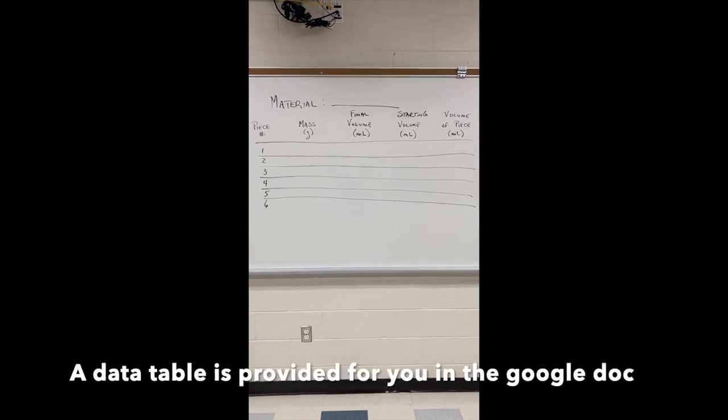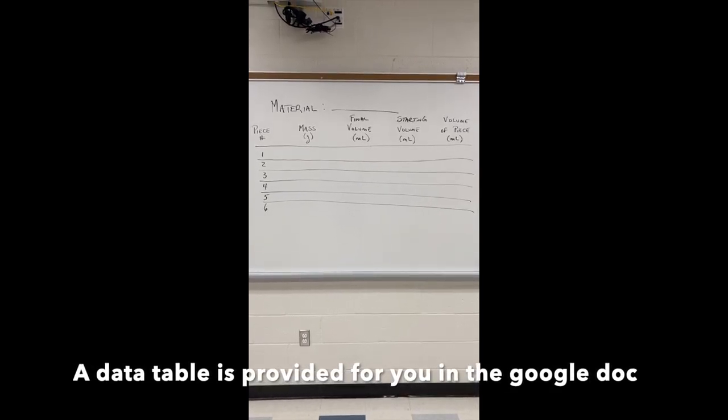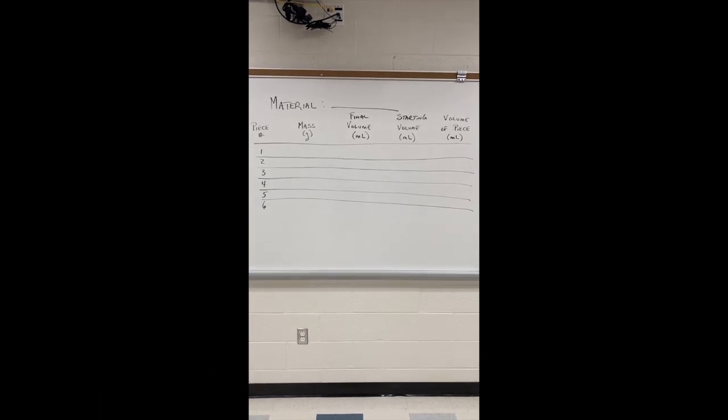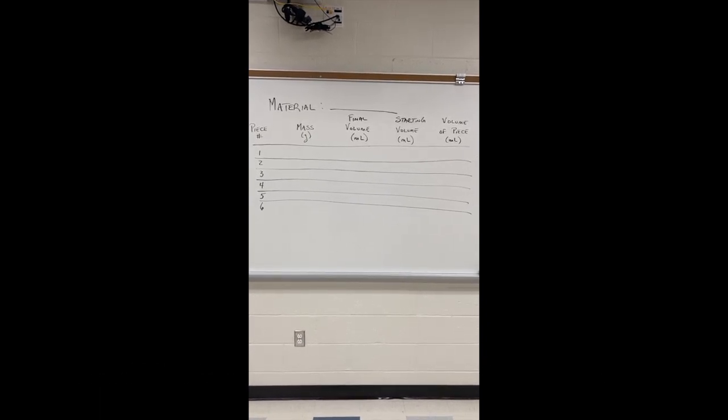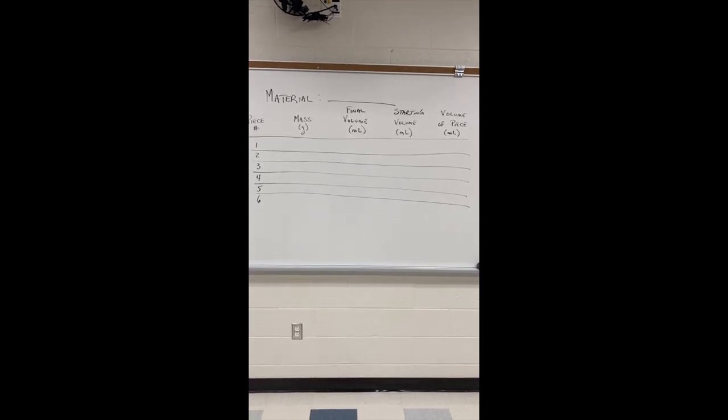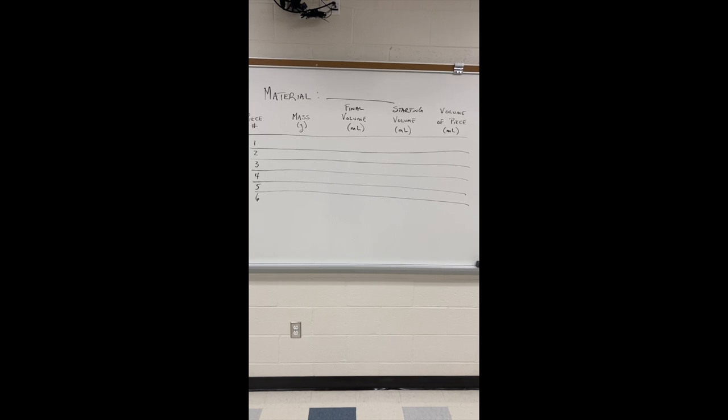The first thing you need to do is set up a data table that looks like this. You will list what material you have - there will be six pieces that we're going to take data on. List the mass of each piece, and then this is going to sound weird, but I want you to list the final volume first and the starting volume second.